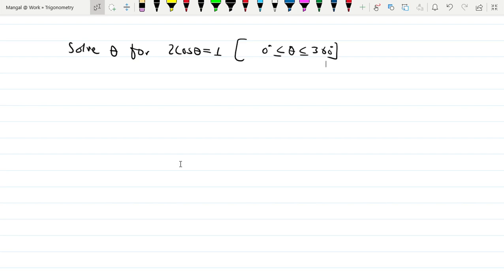The question is: solve θ for 2cos θ = 1, where θ ranges from 0 degrees to 360 degrees.